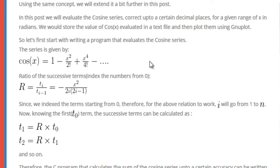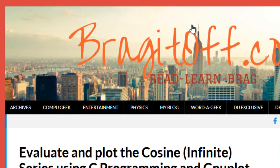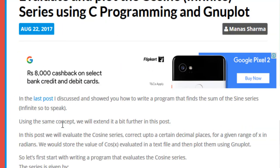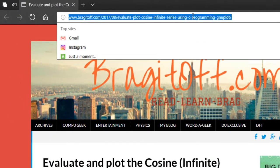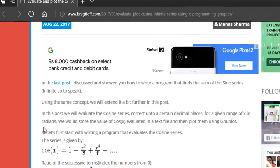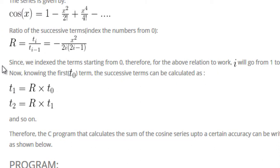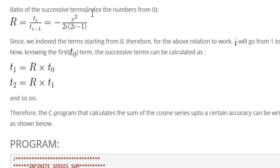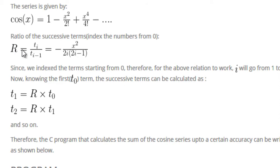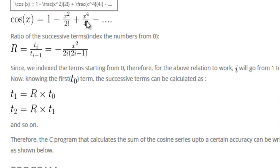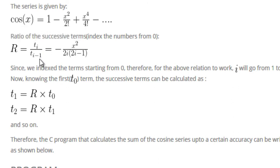We'll be using this series to write a program to evaluate the infinite cosine series. The first thing we need is the ratio of successive terms. We are indexing our terms from 0, so we have t0, t1, t2, and so on. The ratio ti divided by t(i-1) means i starts from 1, since we can't go below t0.